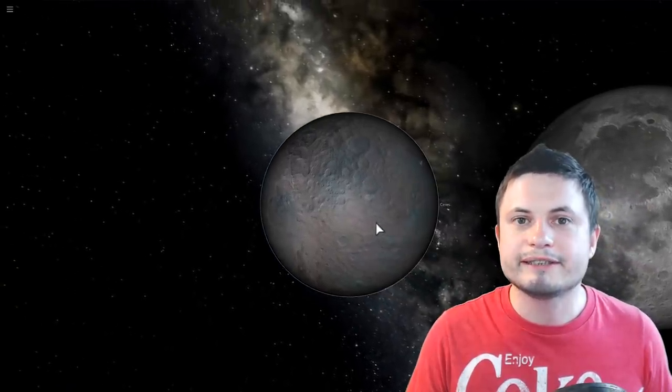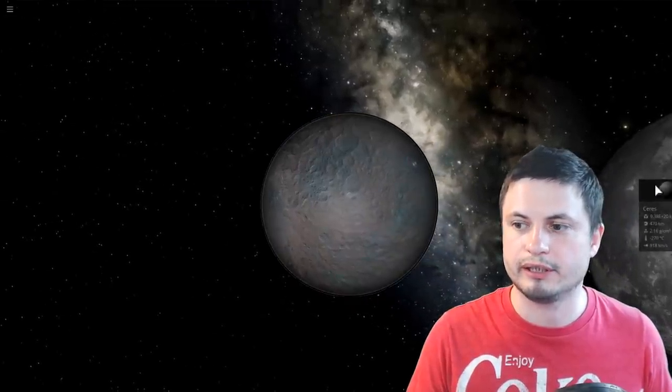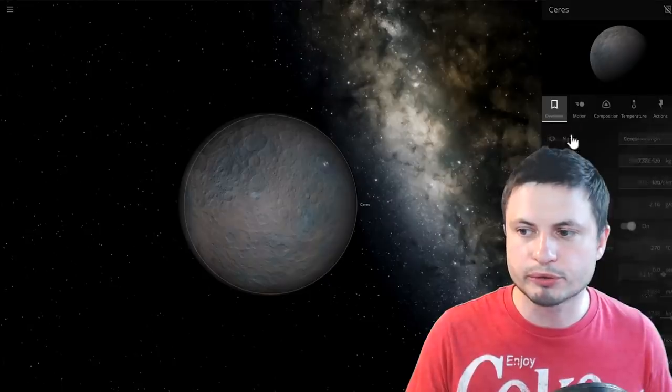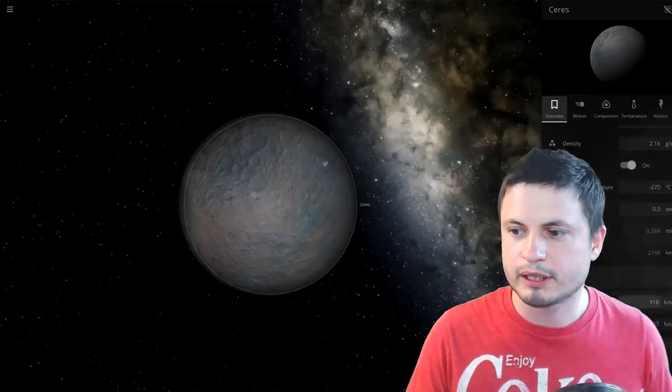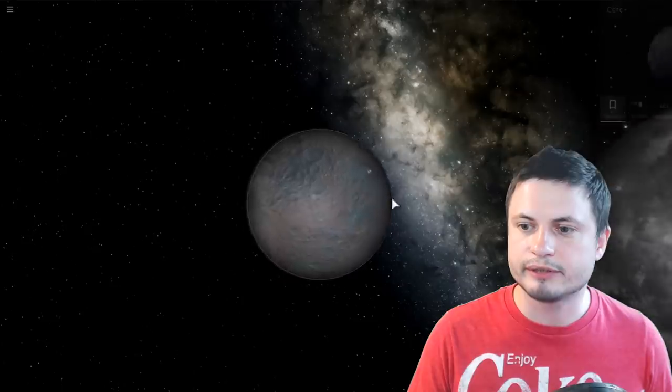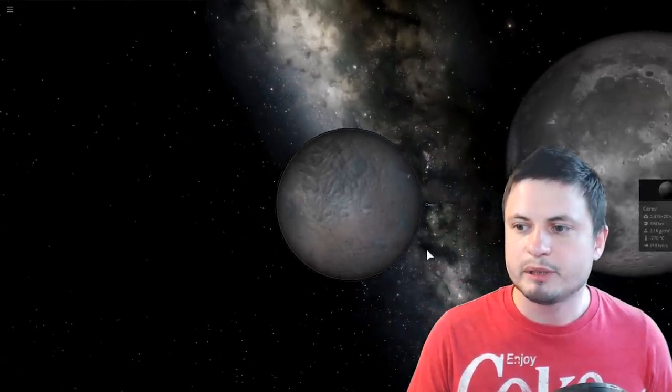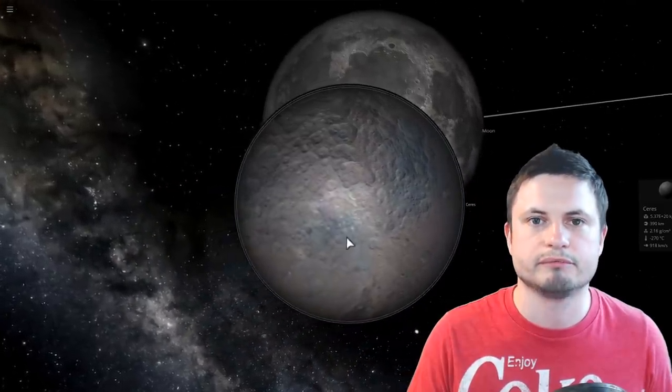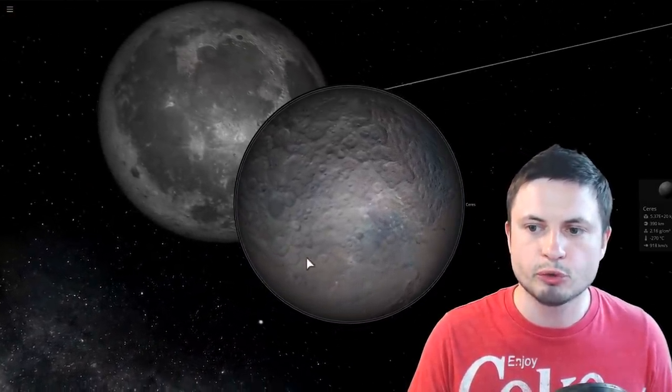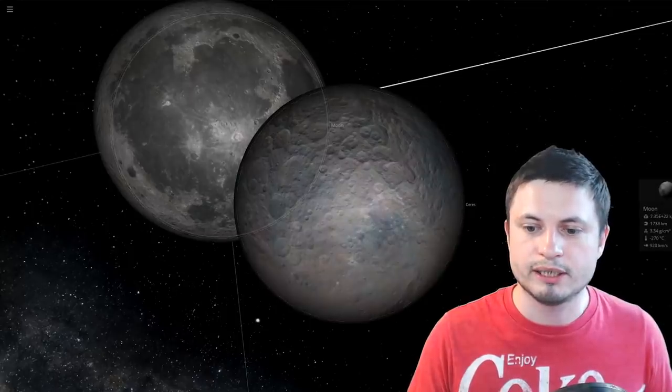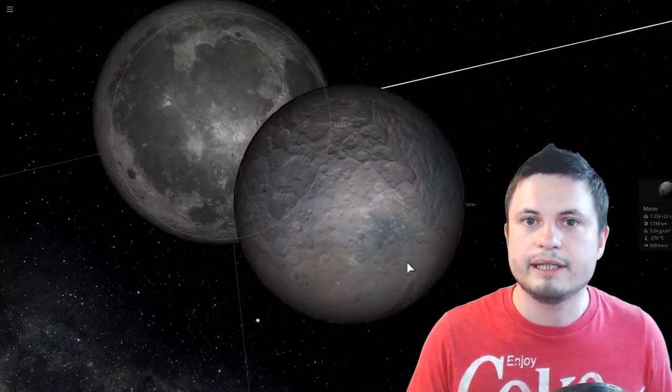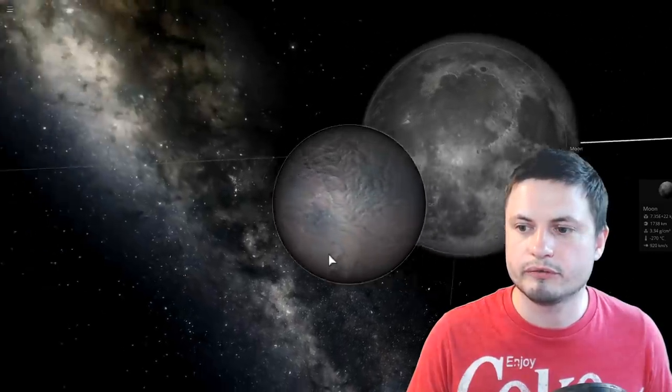What they discovered is that if an object very similar in size to Ceres, which is the dwarf planet in the asteroid belt, slightly smaller than Ceres actually, probably around 780 kilometers in diameter, moving at a speed of about 6200 meters per second or about 6 kilometers per second toward the moon, toward the near side of the moon, collided with it, it would create the effects that we're observing on the surface.